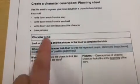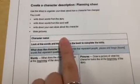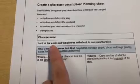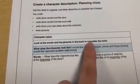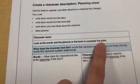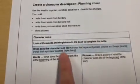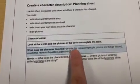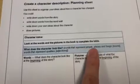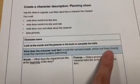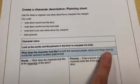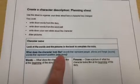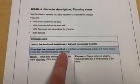So character name — what's his name? Gerald. Look at the words and pictures in the book to complete the table. What does the character look like? Words that represent people, places or things are called nouns. Words that represent qualities are called adjectives.